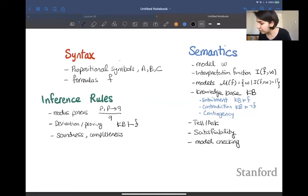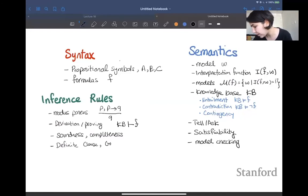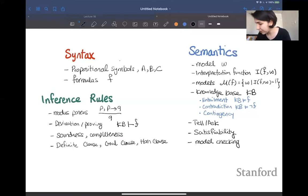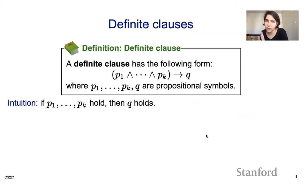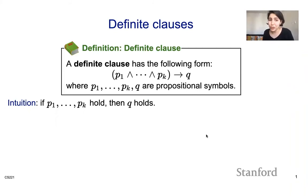To define what a horn clause is, we first have to define what a definite clause is, and also define a goal clause. A definite clause is a clause of the following form: p1 and through pk implying q, where p1 through pk and q are propositional symbols. Note that k could be zero, so you could have essentially true implies q, which gives you just q. That is also a definite clause.